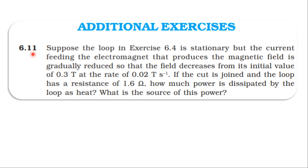Exercise 6.11: Suppose the loop in exercise 6.4 is stationary but the current feeding the electromagnet that produces the magnetic field is gradually reduced so that the field decreases from its initial value of 0.3 tesla at the rate of 0.02 tesla per second. If the cut is joined and the loop has a resistance of 1.6 ohm, how much power is dissipated by the loop as heat? What is the source of this power?